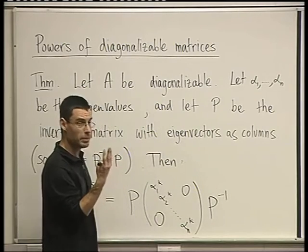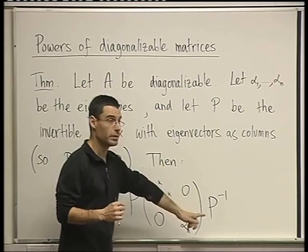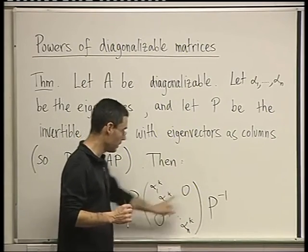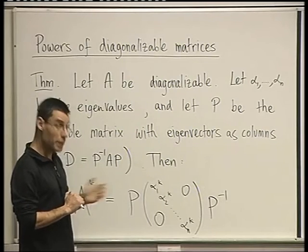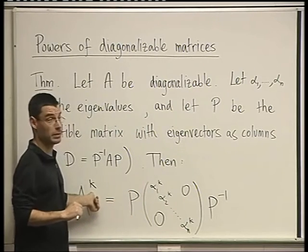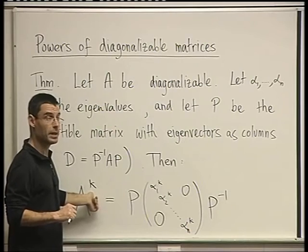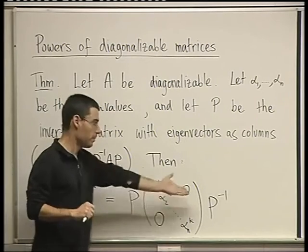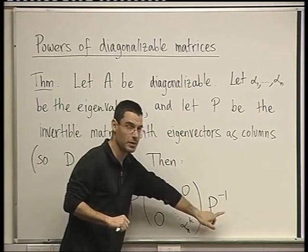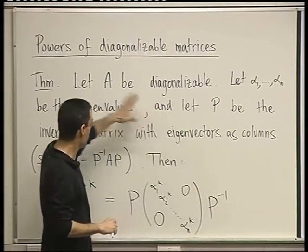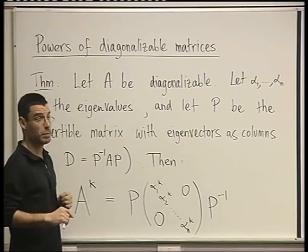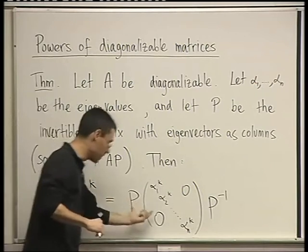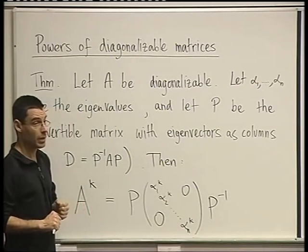And then you only have to multiply three matrices. This one, times this one, times this one. That's it. So it really pays off if K is big. If K is a big number, this really pays off. There's only finding one invertible matrix, finding the alphas and so on, and then the multiplication is just three products, two products. This times this, and then times this.